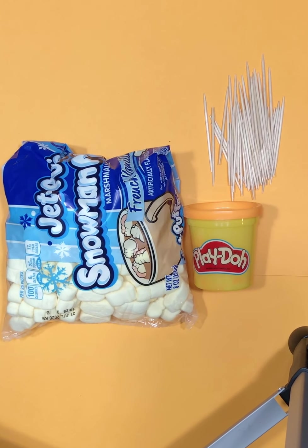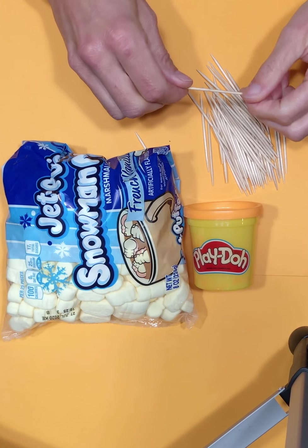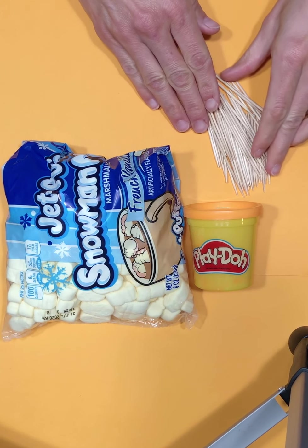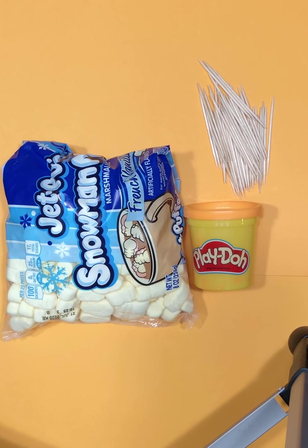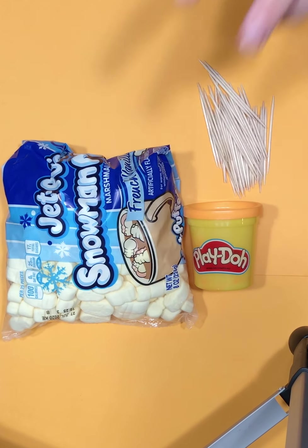Hi everybody, today's activity is called toothpick towers. The materials you're going to need are some toothpicks, round toothpicks work best, and then you're going to need some type of material to use as your connector to connect your toothpicks together. You can either use play-doh, marshmallows, gumdrops, grapes, or candy corn.